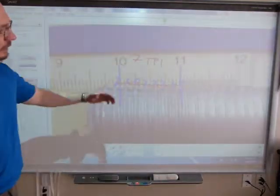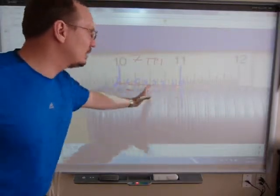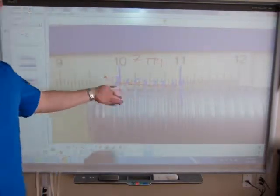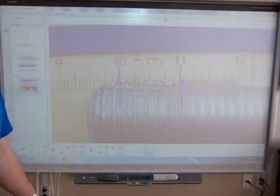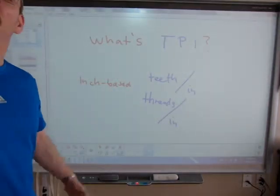Seven threads, seven full turns. The nut has to make seven full turns to travel this one inch. Either which way you look at it. That's what seven TPI is, or that's by and large what TPI is and what it means.